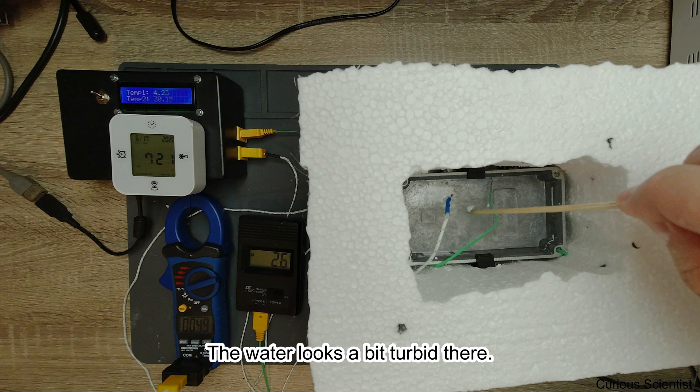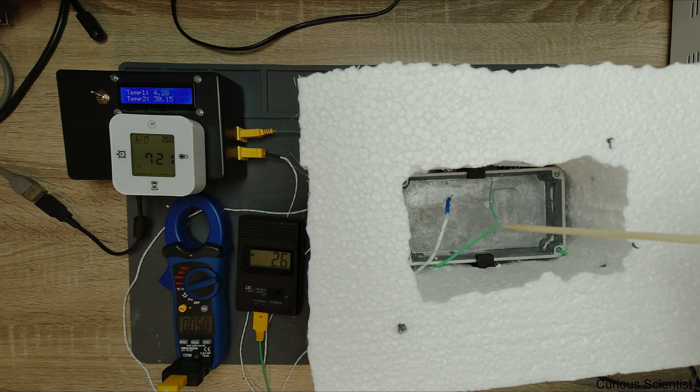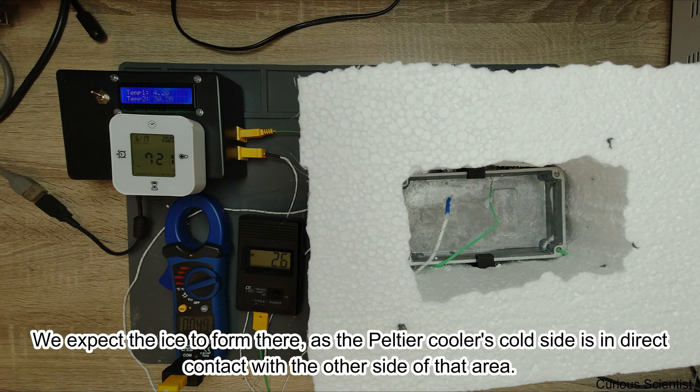The ice, of course, here is the other side of the Peltier, the cold side. That's why the ice forms there.